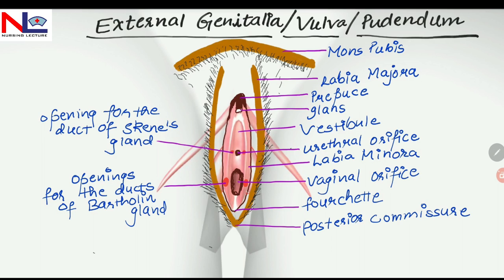Internal to the labia majora is the labia minora. These are two small folds of skin without any fat pad or hair follicles. Anteriorly, they enclose the clitoris and unite to each other to form the clitoral hood, or prepuce. At the lower end, they fuse together medially and form a fold of skin known as the fourchette.